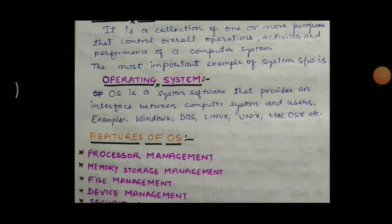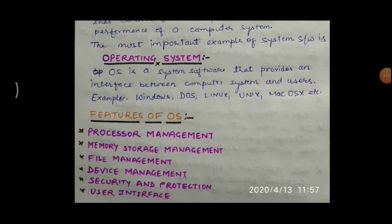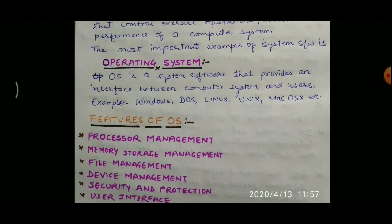The next point is memory and storage management. The OS manages the sharing of internal memory among multiple applications. Whenever we run any application, that application is first loaded from secondary storage into RAM. The OS manages the sharing of RAM among multiple applications. It also takes care that one process should not consume the memory allocated to another process, and ensures proper utilization of different types of memory.